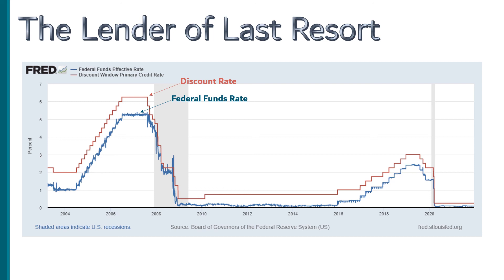But when a panic did happen, this is how the Fed would be able to save the financial system and keep the economy from collapsing. As the lender of last resort, the Fed could prevent credit markets from freezing up by fulfilling the role themselves.